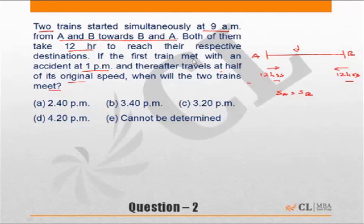If the first train met with an accident at 1 p.m., so at 1 p.m.—they started at 9 a.m., both of them started at 9 a.m.—but at 1 p.m., let me assume the first train is at this point. The first train meets with an accident, then the speed becomes half the original speed.